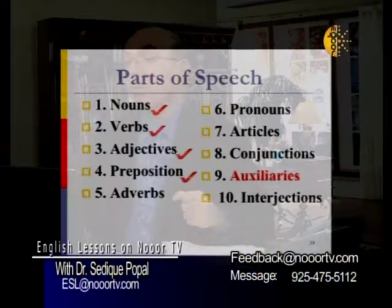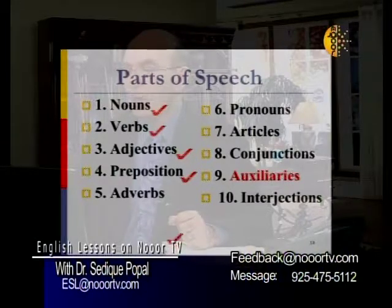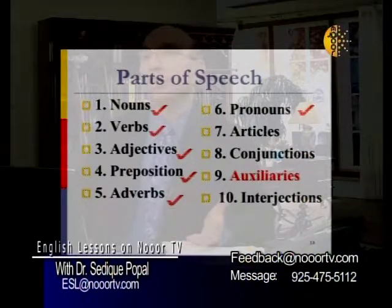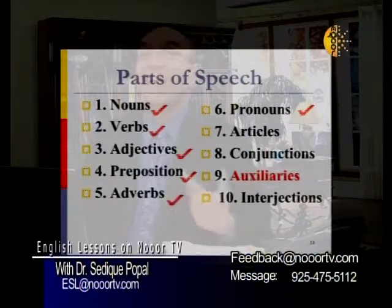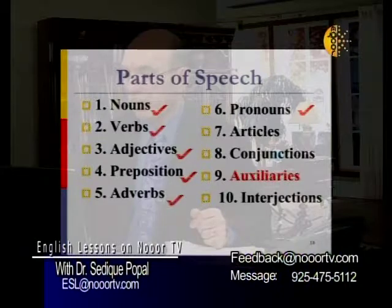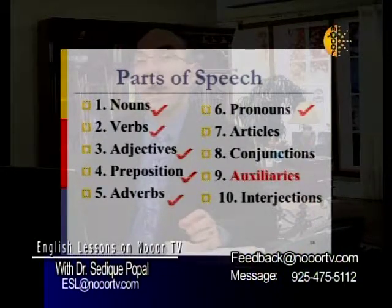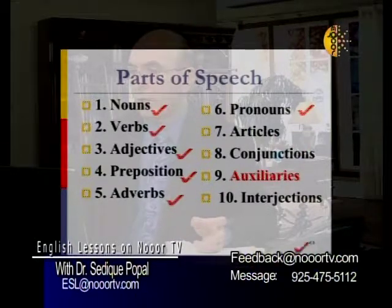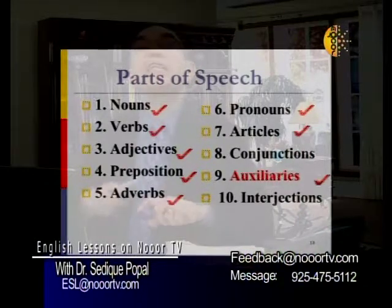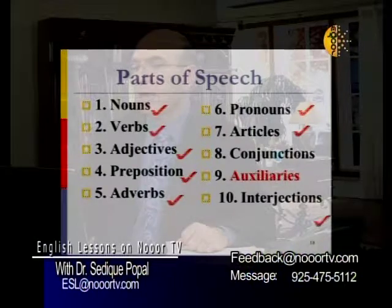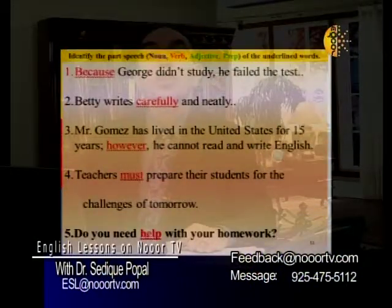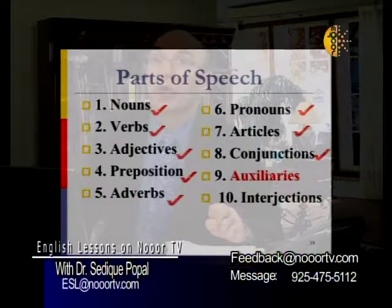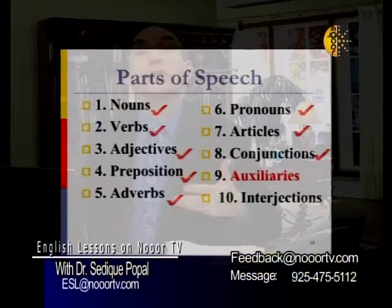Pronouns are words that take the place of a noun. Like 'my brother is an engineer. He works for Caltrans.' 'He' means my brother — it takes the place of the noun 'brother.' Articles are words like 'a,' 'the,' and 'an' — there are only three articles in English and they come before a noun. Conjunctions connect sentences. Auxiliaries come before the verb and express different kinds of mood — modal auxiliaries — changing the mood of the sentence.